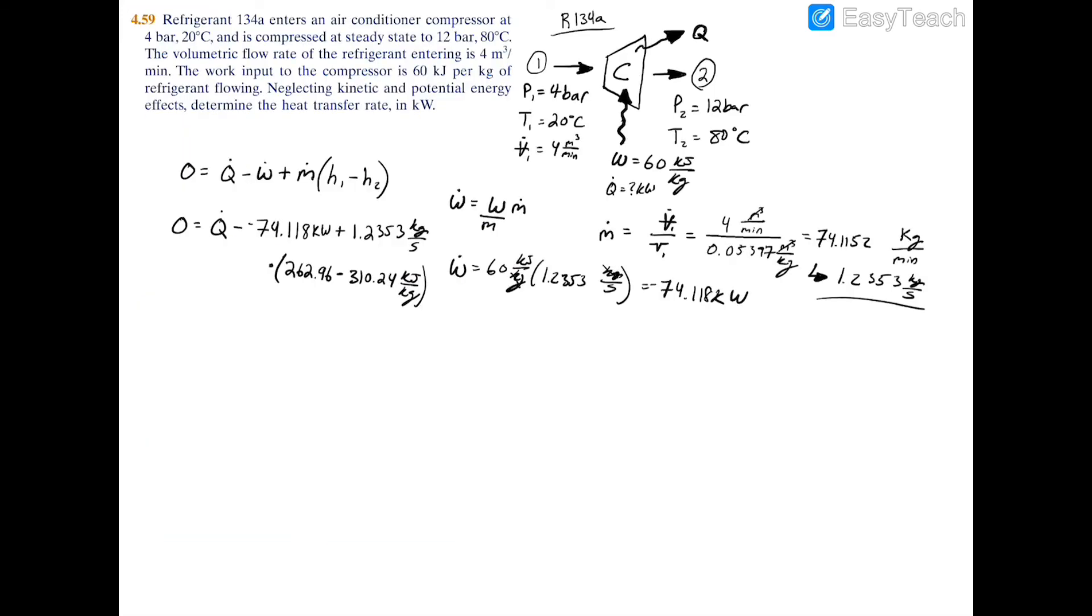And once you have that, you can cancel out the kilograms and kilograms, and you'll have kilojoules per second, which is in fact a kilowatt. And now you can successfully add your heat transfer, power, and change in enthalpies because you have the specific unit of kilowatt across the board. Now you'll have that the heat transfer Q dot equals negative 15.71 kilowatts. And because it's a negative number, you know that that heat transfer is actually exiting the system.